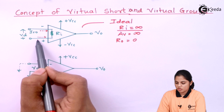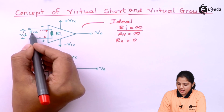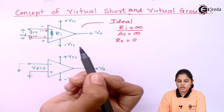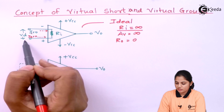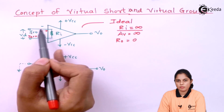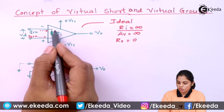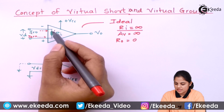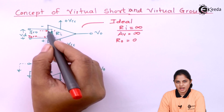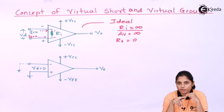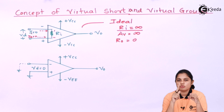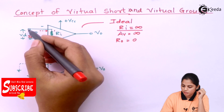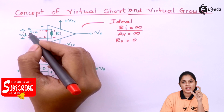If input resistance is infinite, there will be no current flow through the inverting terminal as well as the non-inverting terminal — that means i1 is zero and i2 is also zero. If current entering into both terminals is zero, there will be no voltage drop produced across resistance Ri.